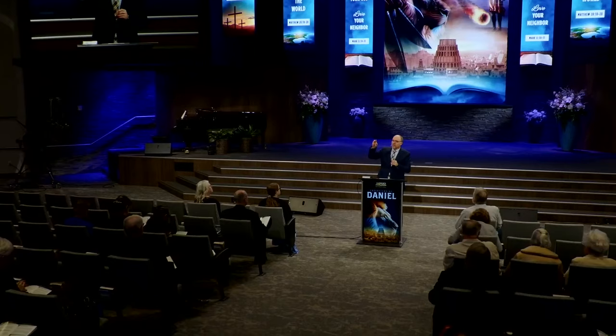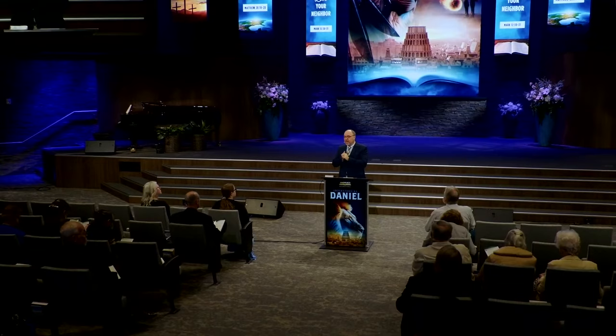Daniel chapter 11 goes through the same history but gives a lot more detail. It begins by describing Persia, then Greece and its four divisions, then focuses primarily on the king of the north and the king of the south during the Grecian Empire — that is the Seleucid Kingdom in the north and the Ptolemy Kingdom in Egypt. Israel was between the two, so whenever these kings came into conflict, it always involved the people of God. That's where we find ourselves now in verse 14, talking about the Seleucid and Ptolemy kingdoms in conflict.